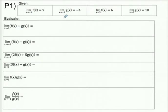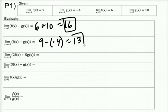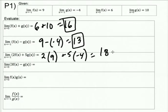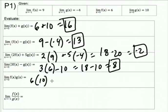So for P1, same idea — pause me if you don't want me to do it. The limit as X approaches three means we use the six and the ten, so F plus G gives a 16. Using the negative one values, F minus G gives nine minus a negative four, which is 13. Using the negative one values again, two times the F limit plus five times the G limit gives 18 minus 20, which is negative two. Using the X approaches three values, three times F minus G gives 18 minus 10, which is 8. And using X approaching three, F times G gives 60.